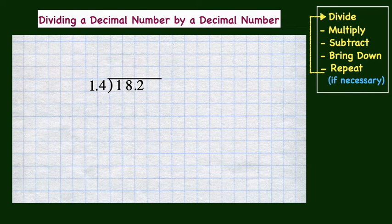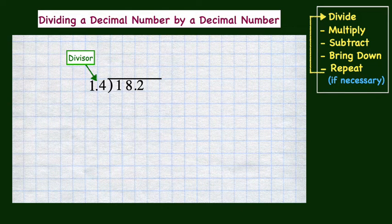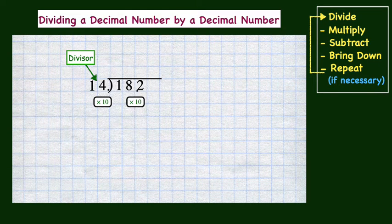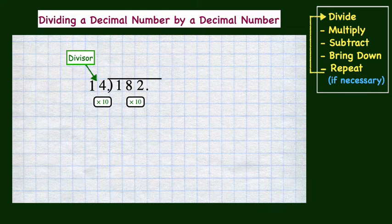Now let's switch gears here a bit. Instead of a whole number divisor, we have a decimal number. When the divisor is a decimal number, the first step is to convert the divisor into a whole number. So right now we have 1.4, and if we multiply it by 10, that will allow us to move this decimal point one place to the right, and we will have the whole number 14. But we are not done. To keep this expression balanced, we need to multiply the dividend by 10, which will move the decimal point in the dividend one place to the right as well. So 18.2 becomes 182.